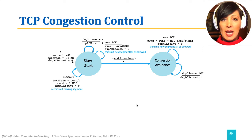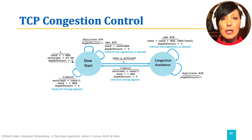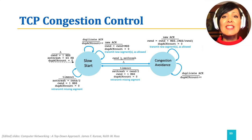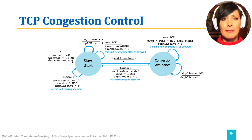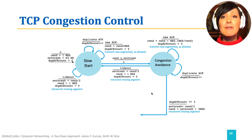If a timeout happens in congestion avoidance state, CWND is reset to 1, the SS threshold is set to half of the window size when congestion was experienced, and the state is changed back to slow start. If triple duplicate ACKs happen, which is a milder indicator of congestion, the state is changed to fast recovery.